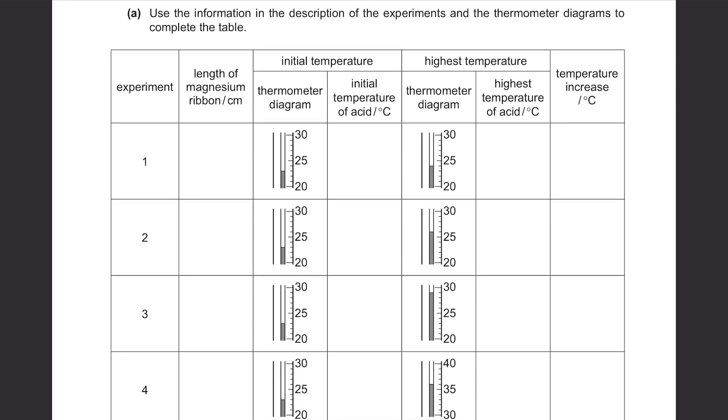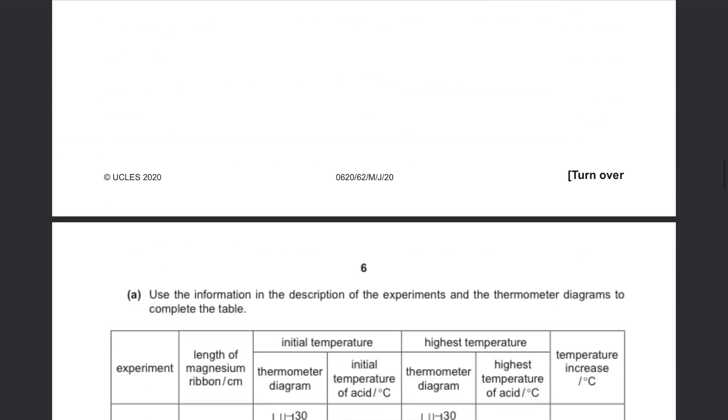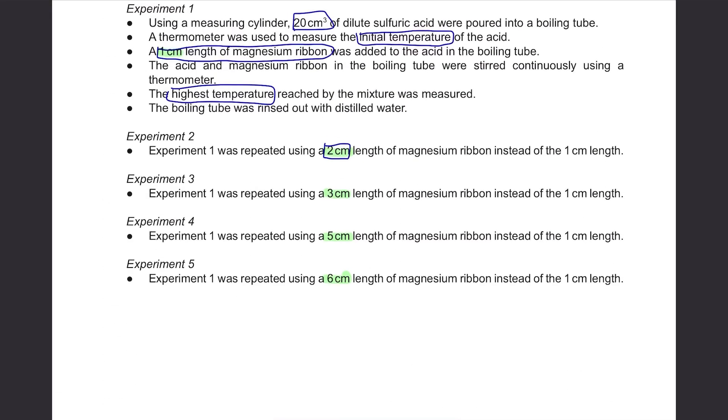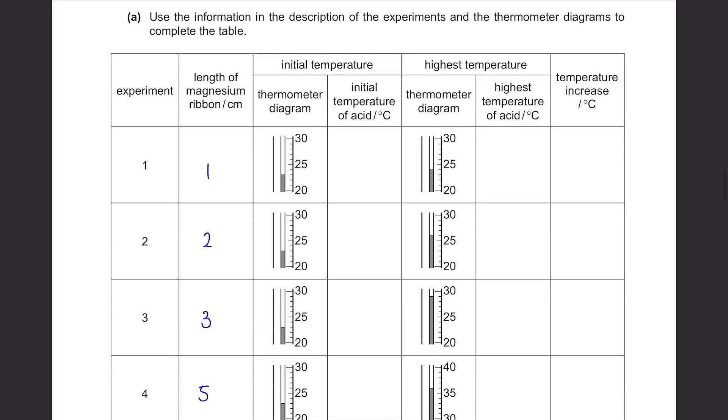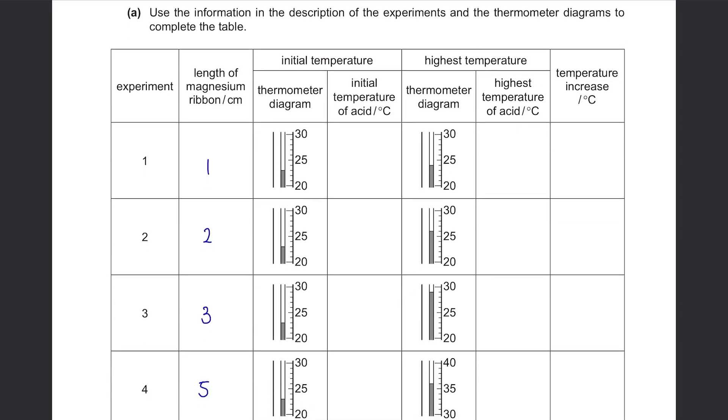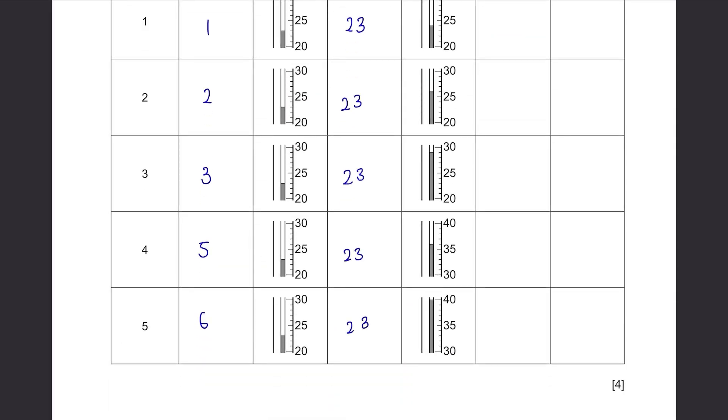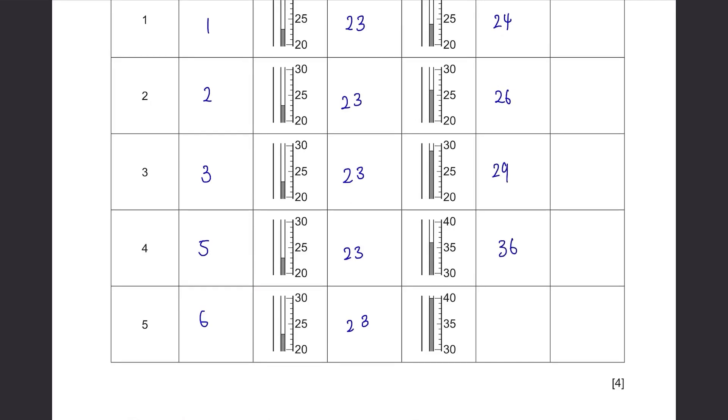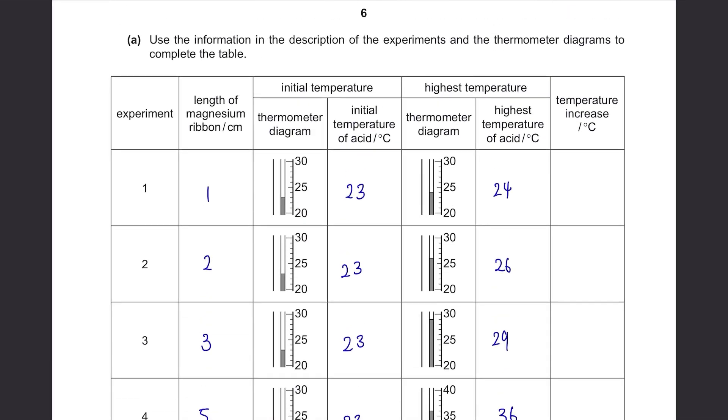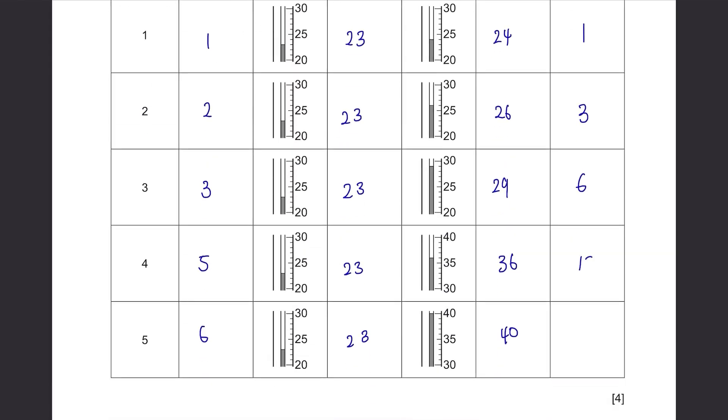Part A: Use the information in the description of the experiments and the thermometer diagrams to complete the table. Length of magnesium ribbon. They were 1, 2, 3, 5 and 6. Let's write that down first. Then it's simple. You just have to read the readings. The initial temperatures are 23, 23, 23, 23. The initial temperatures are the same. The highest temperature of acid: 24, 26, 29, 36, 40. Temperature increase: just calculate how much it has increased. 1, 3, 6, 13, 17.